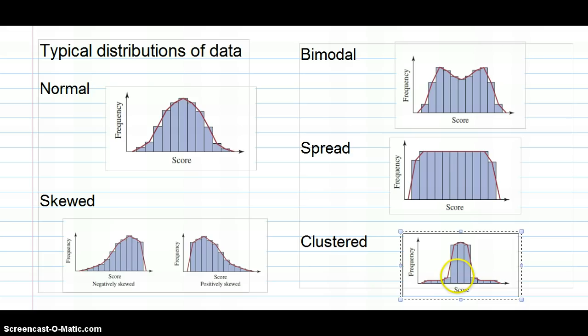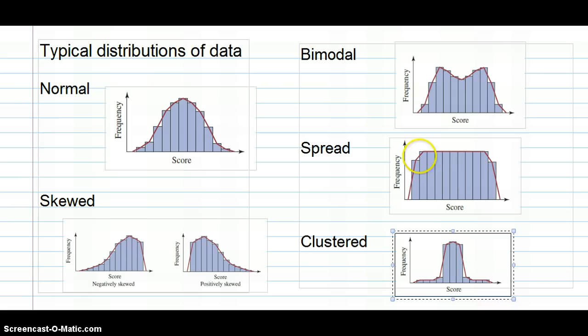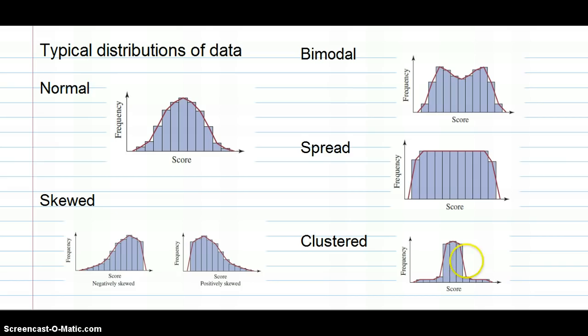And finally, we have clustered data, which is kind of the opposite of spread data. Whereas spread data, there's a very even frequency across all the different scores. With clustered, there tends to be some very high scores and some very low on either side. So it's not a gradual rising and falling like in the normal distribution. We've got these scores with very low frequencies. Then all of a sudden, very high frequencies and then very low frequencies again. So the clustered distribution is the opposite of the spread distribution.